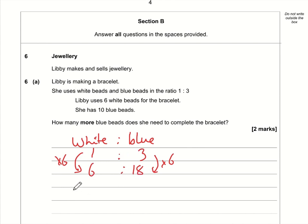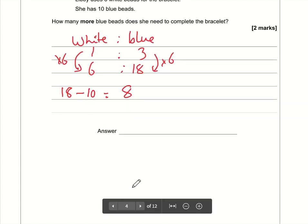So if we need 18 blue beads but she's got 10 already, then she's going to need an additional 8 beads to complete the bracelet. So the final answer there is 8.